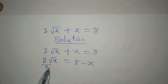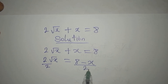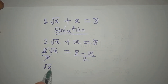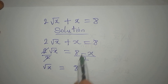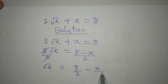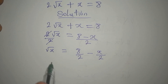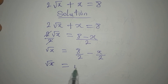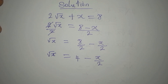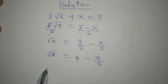Now let's remove the 2 by dividing both sides by 2. This gives us √x = 8/2 - x/2, which simplifies to √x = 4 - x/2.